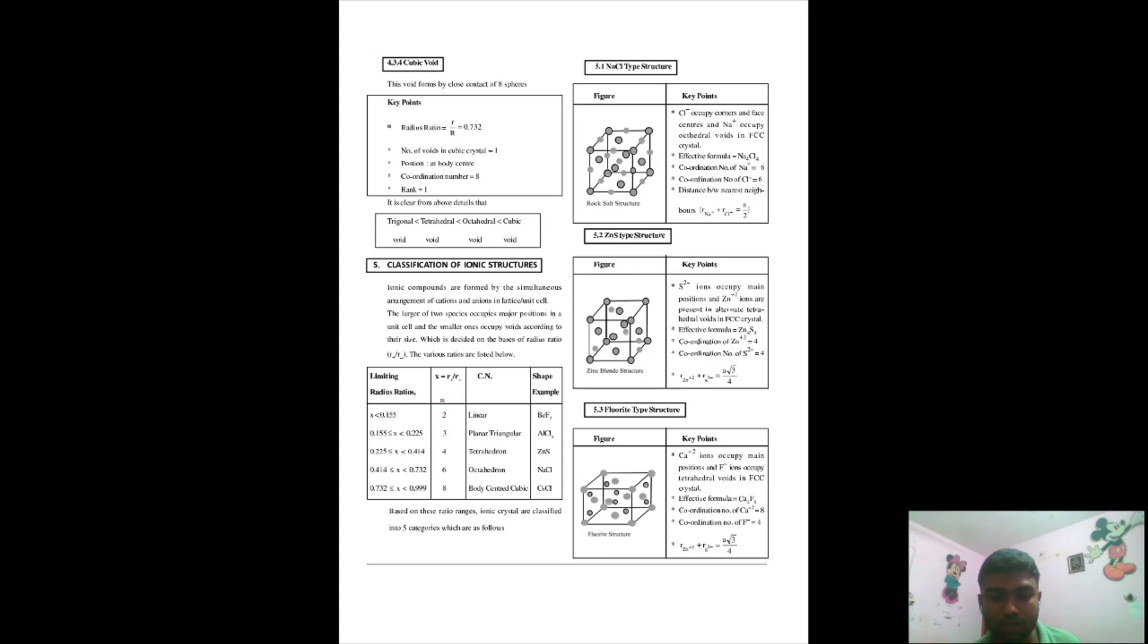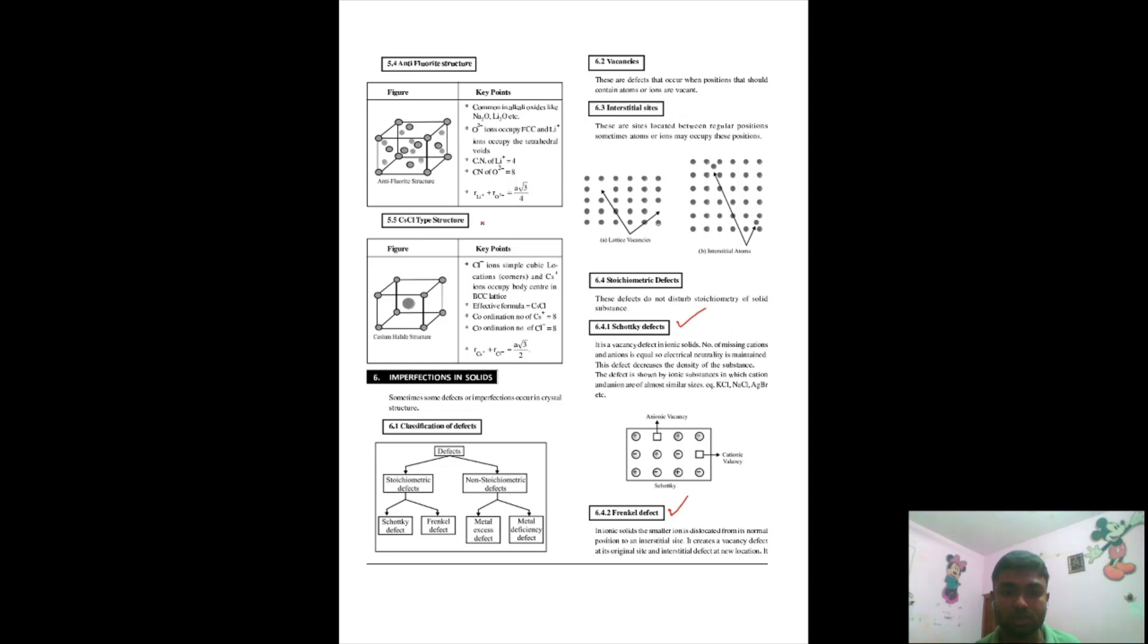What you need to memorize here is the coordination number and the examples. Each of these examples is important. You have to memorize what is the coordination number of fluoride here, what is the coordination number of calcium, what kind of void is it, what kind of crystal is this. These expressions are very specific for these types: the fluoride type, the ZnS type, the NaCl type - these are all important. The CsCl type, anti-fluoride type, all of these are important. Please go through, read these and memorize. At least if you don't want to memorize anything else, memorize CsCl and memorize fluoride. These two are very important.